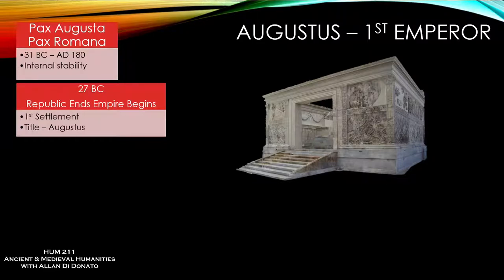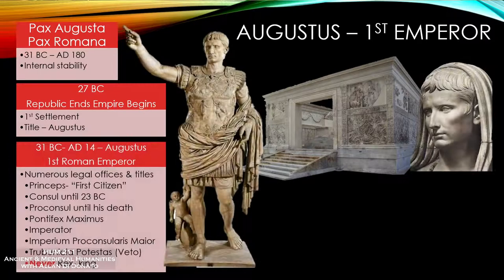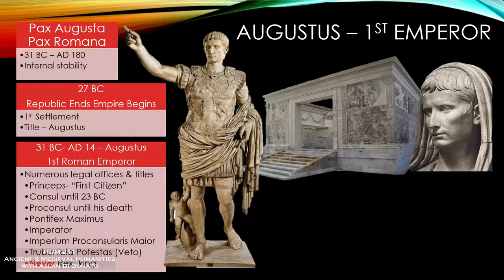Here is where Augustus is going to be most successful. He's the first emperor, but he doesn't call himself emperor. He doesn't present himself overtly as a king the way Julius Caesar did — so he's going to succeed where his adopted father failed. Caesar was assassinated because he presented himself too much as a king or even as a god. Augustus prefers the title princeps, which means 'first citizen,' wanting to look like first among equals.